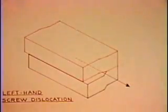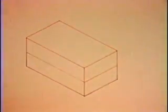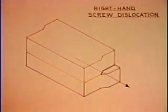The screw dislocation may have either a left hand or a right hand twist. The Burgers vector of one is the negative of the other.